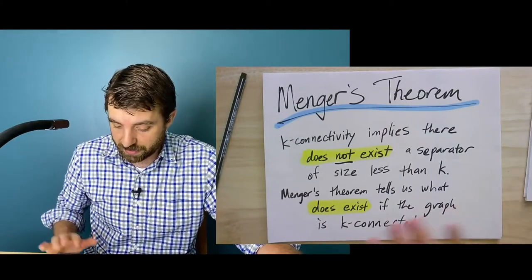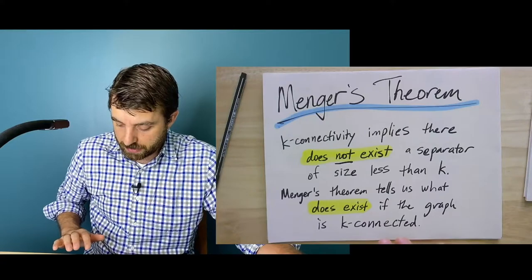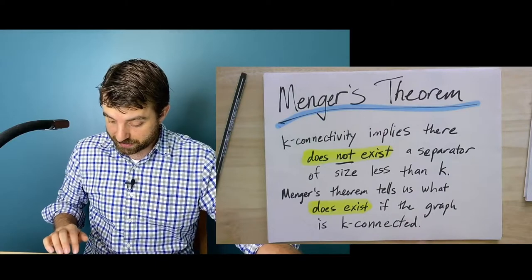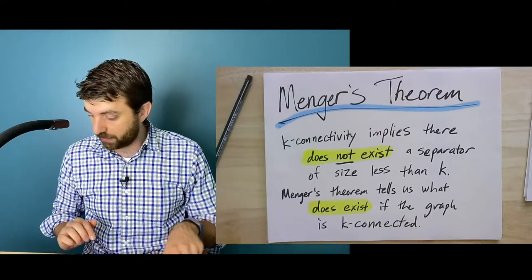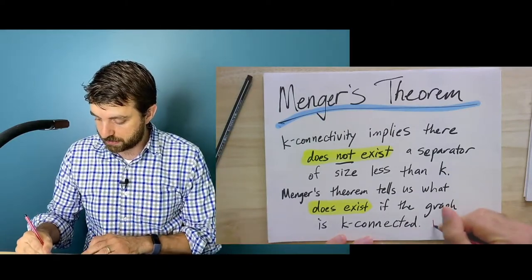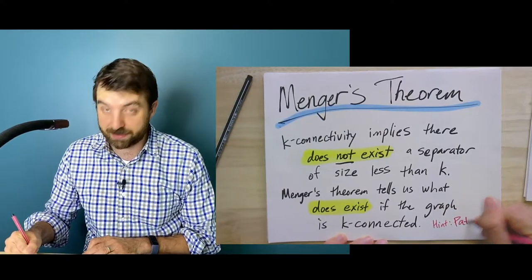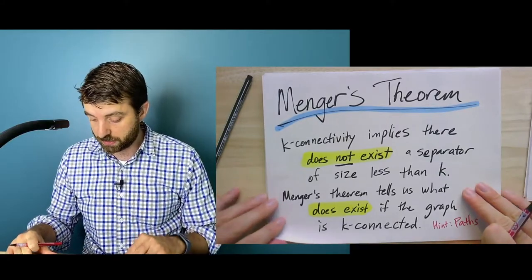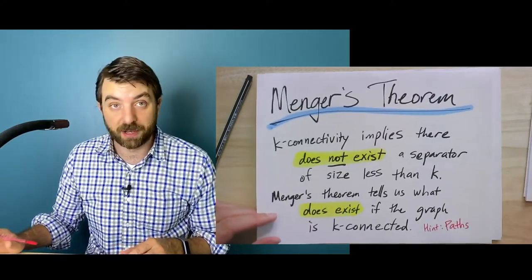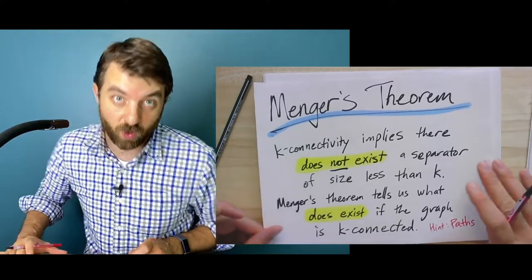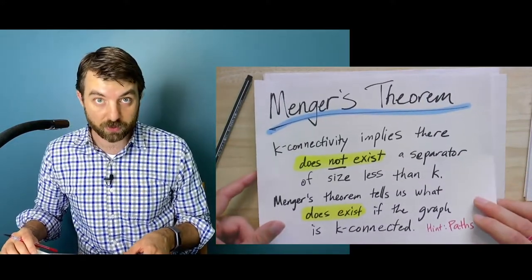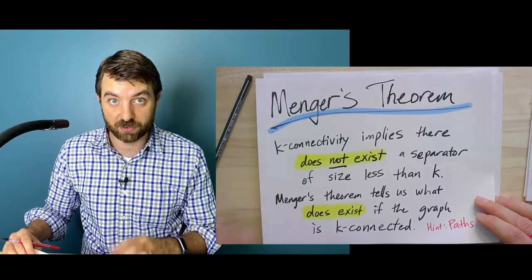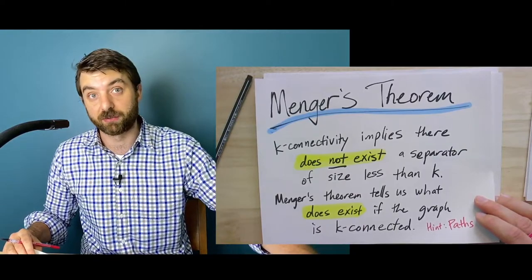Here's a summary: k-connectivity says there doesn't exist a separator, and Menger's Theorem tells us that something will exist — and the hint is that it's going to be some paths. Menger's Theorem will tell us that for k-connected graphs, we do have certain paths that must exist in the graph. Before I can really state the theorem and the proof, which we'll get through all in this video, I want to give some definitions of certain kinds of paths that are interesting and relevant.